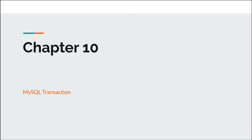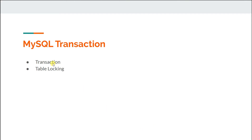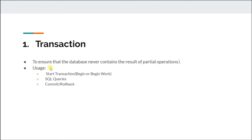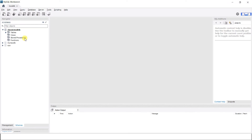Welcome to chapter 10. In this chapter we will be talking about MySQL transactions, and we will be looking into two topics: transactions and table locking. To understand what a transaction is, first we need to understand what happens whenever we add an order. Let's check our orders table.